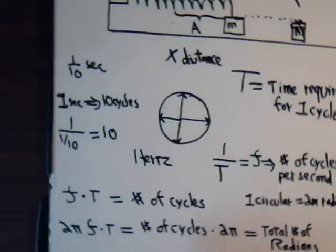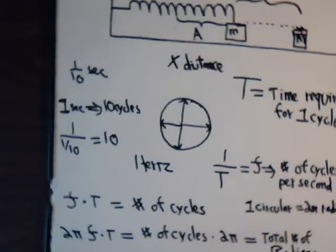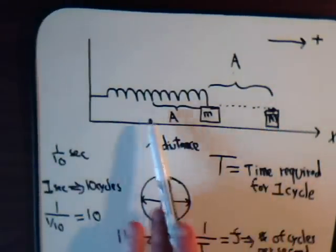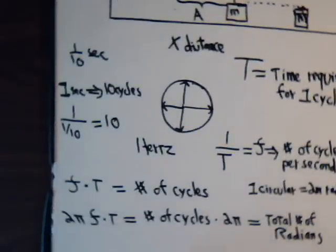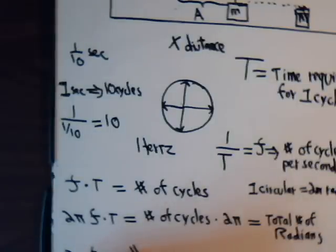So, frequency times time gives us the number of cycles. One cycle is 2 pi radians, so if we multiply by 2 pi, that gives us the total number of radians. Multiplying both sides of the equation by 2 pi: 2 pi f times t equals the total number of radians. Or, dividing both sides by t: 2 pi f equals the number of radians divided by the time.